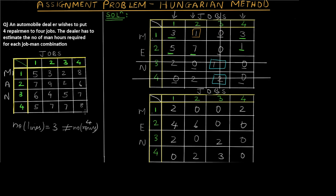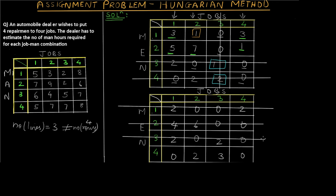Now we again try to cover all the zeros using the minimum number of lines. One line covers two zeros, another covers two zeros, and we still need two more lines to cover the remaining zeros — giving us four lines total, which equals the number of rows, four. The solution is now optimum.